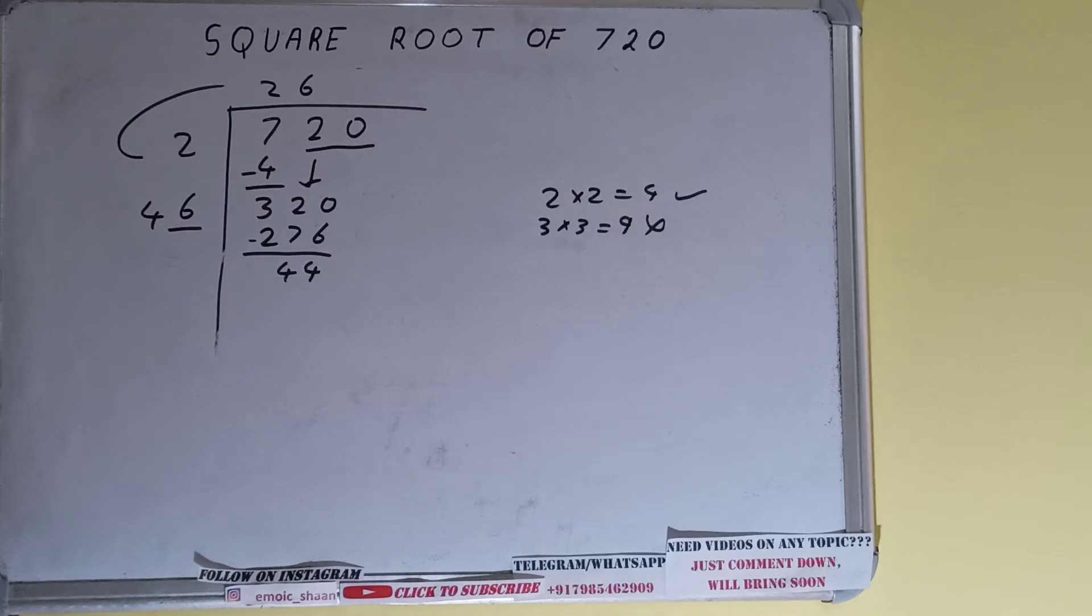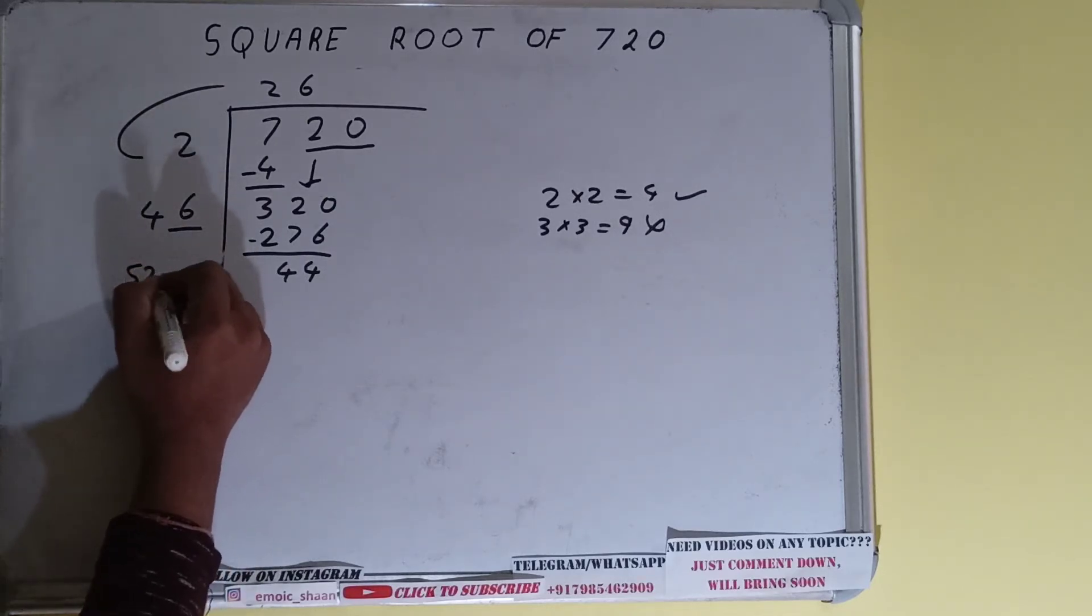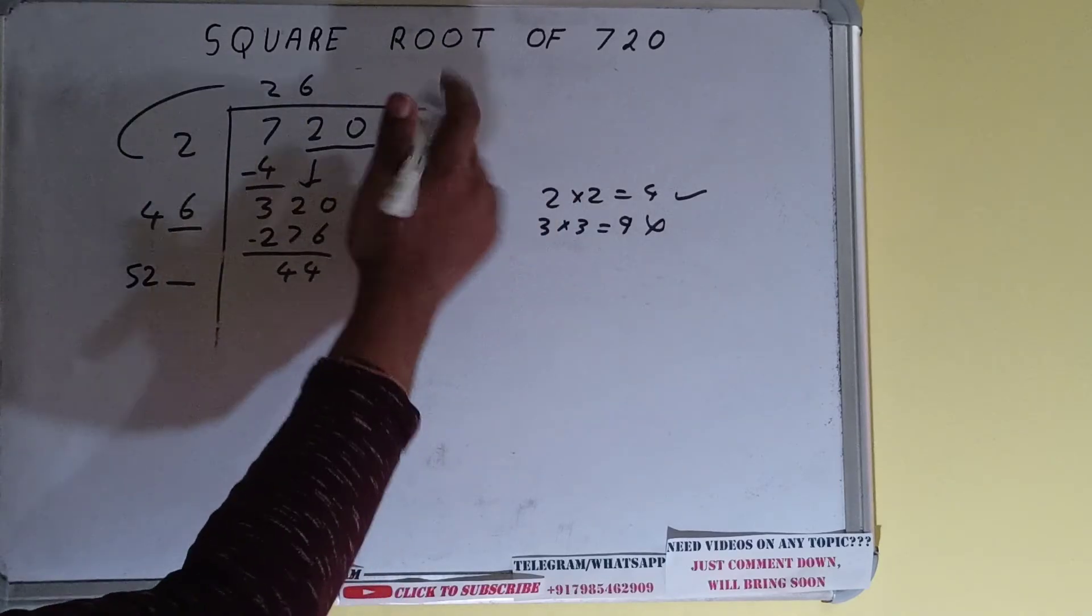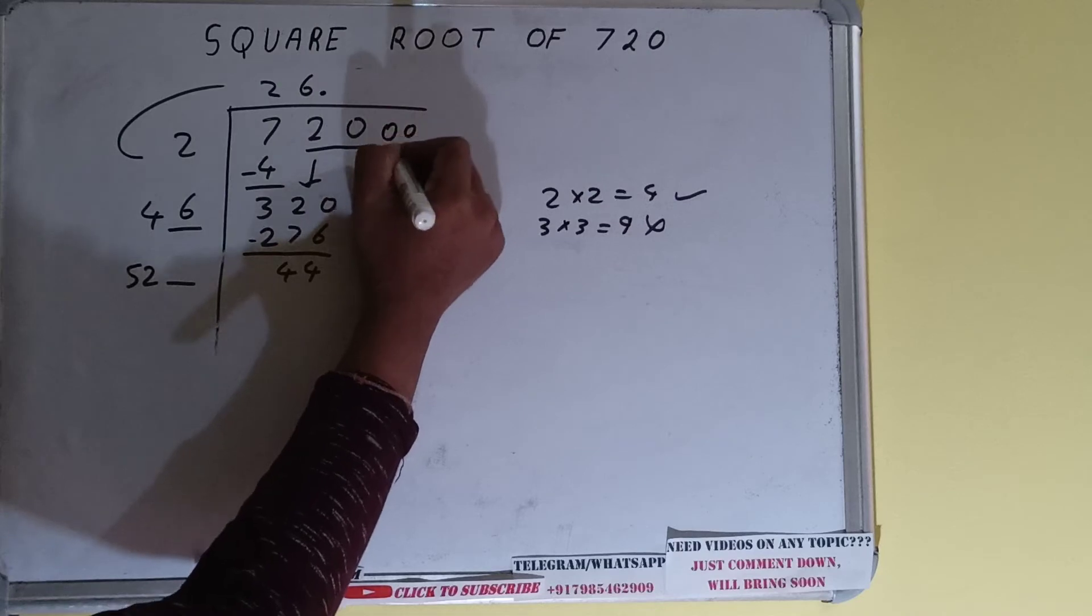So add both, so 46 plus 6 will be 52 and 1 digit extra. And this number we need to make it big, but we don't have more pairs, so we'll put decimal. Once we put decimal we can bring down pair of zeros and number will become as 4400.